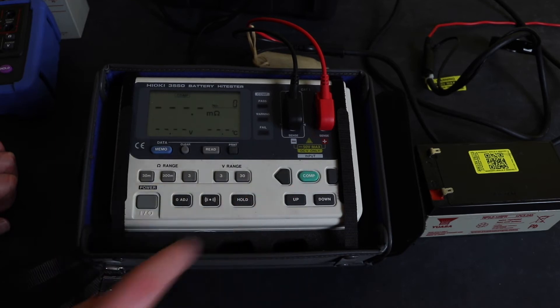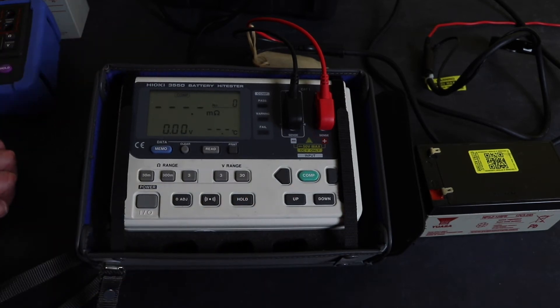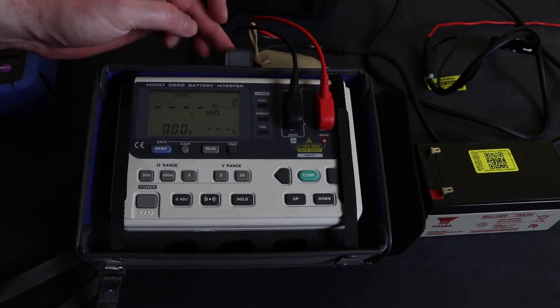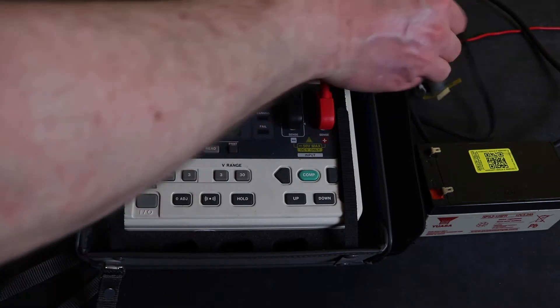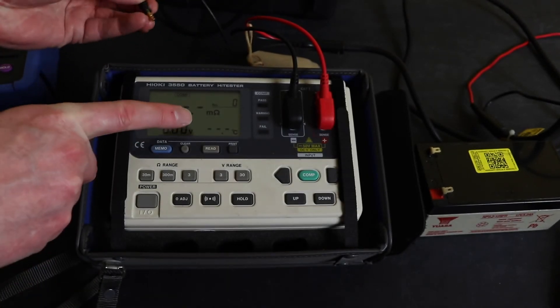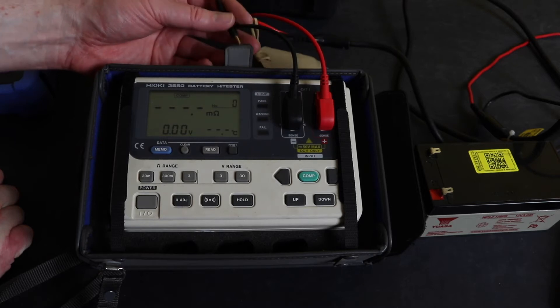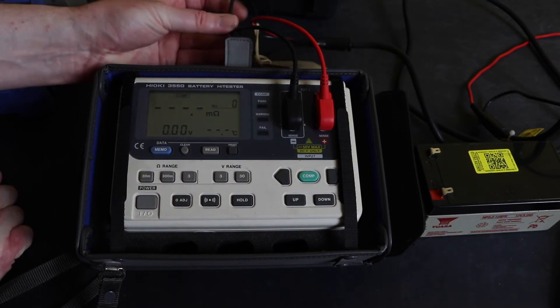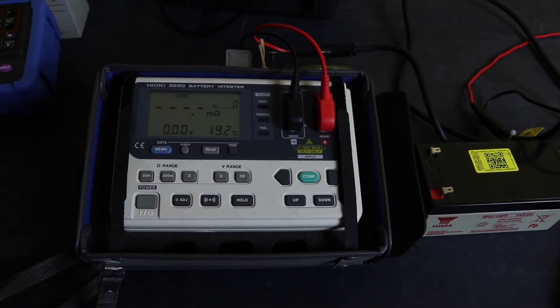You can see I've got a little comparator symbol up there showing I'm in comparison mode. I'm using the Kelvin clips and down in the bottom corner the degree C is blanked out, but I've got the Kelvin clips with the temperature probe. As soon as I plug it in it should register a reading - yeah, 19.9 degrees C.